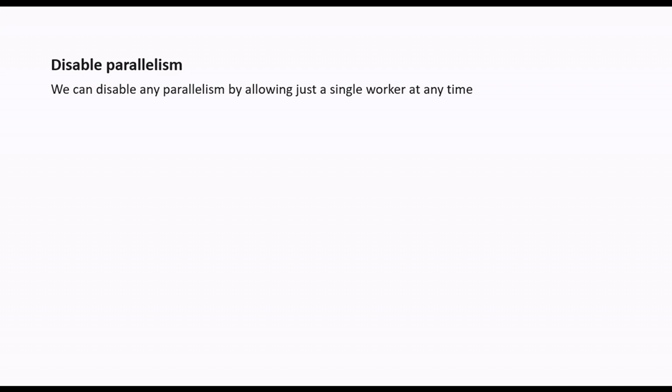Now, how do we disable the parallelism? If we don't want to execute the tests in parallel, we can pass a single worker value at any time. We can pass the worker value 1 from the command line or we can also pass it from the configuration file.